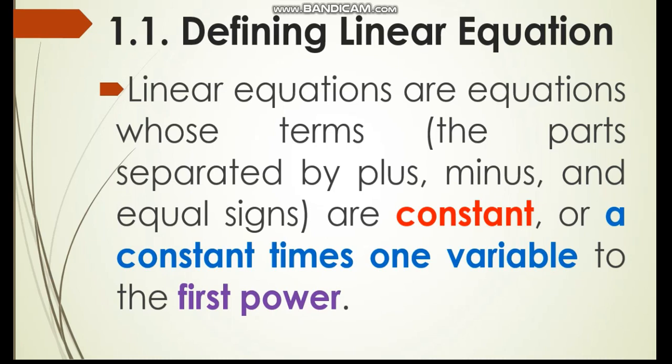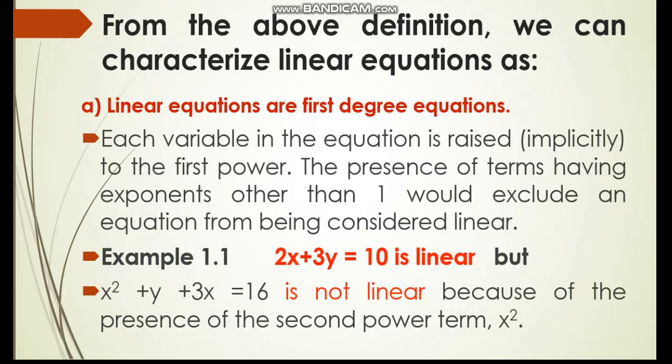From this definition, we can conclude these characters of linear equations. The first one is, linear equations are first-degree equations. Each variable in the equation is raised implicitly to the first power. As I told you, the power or exponent of variables involved in a linear equation must be 1, cannot be negative, cannot be greater than 1. It is implicitly stated. This is one of the attributes of linear equations.